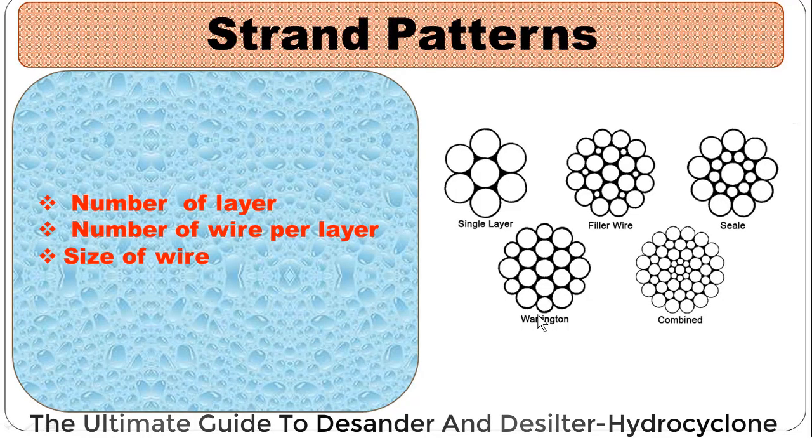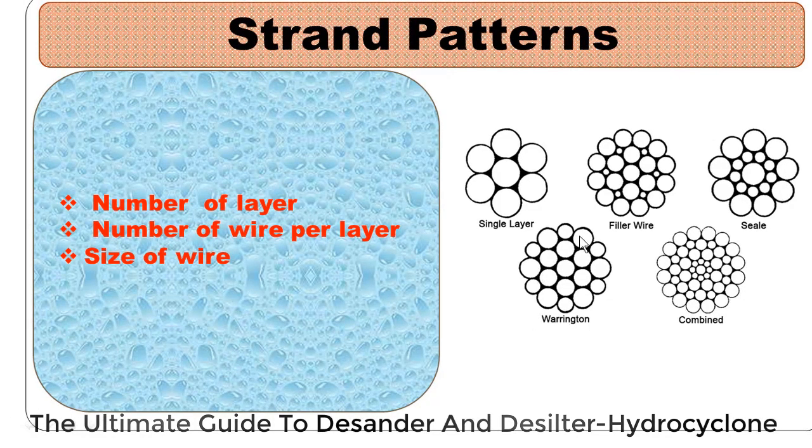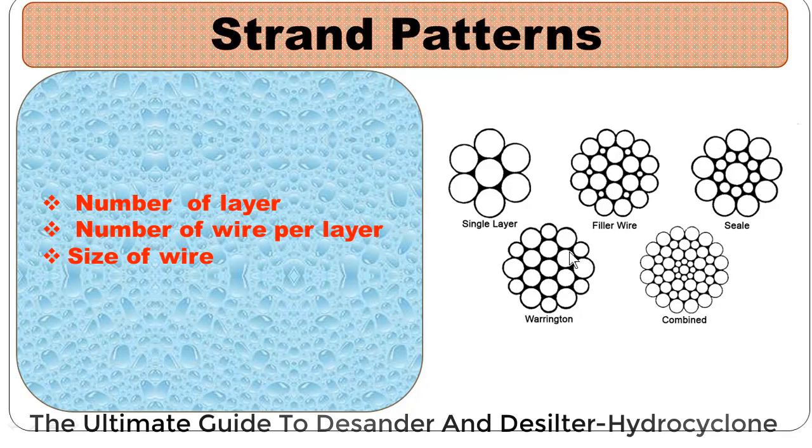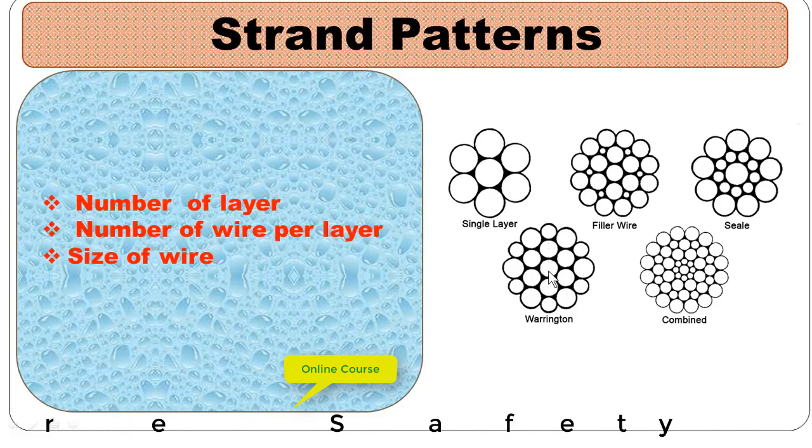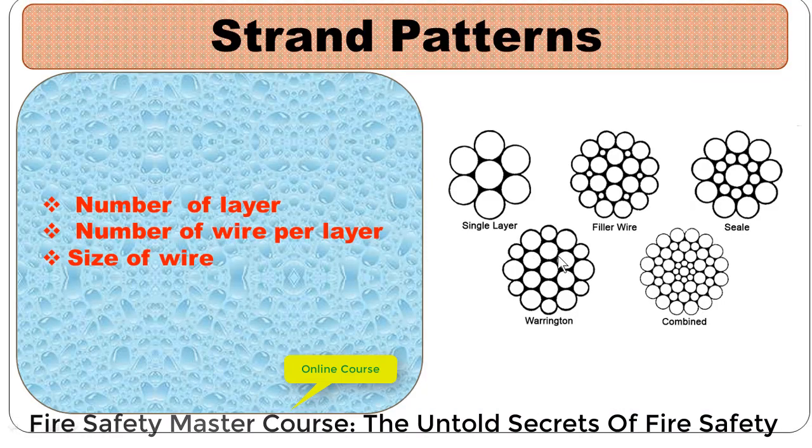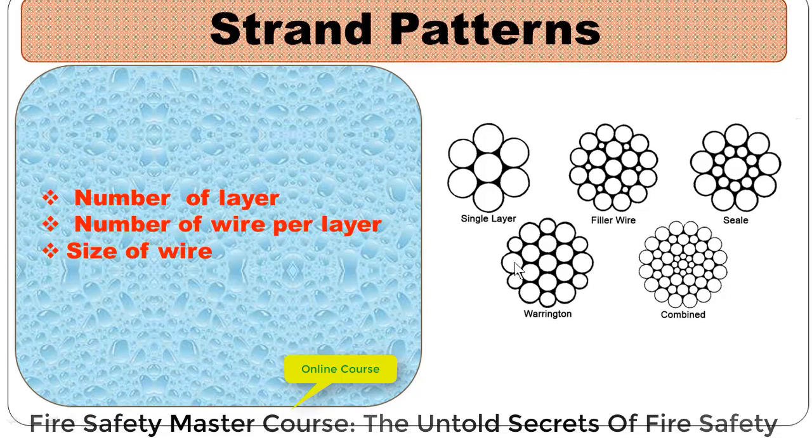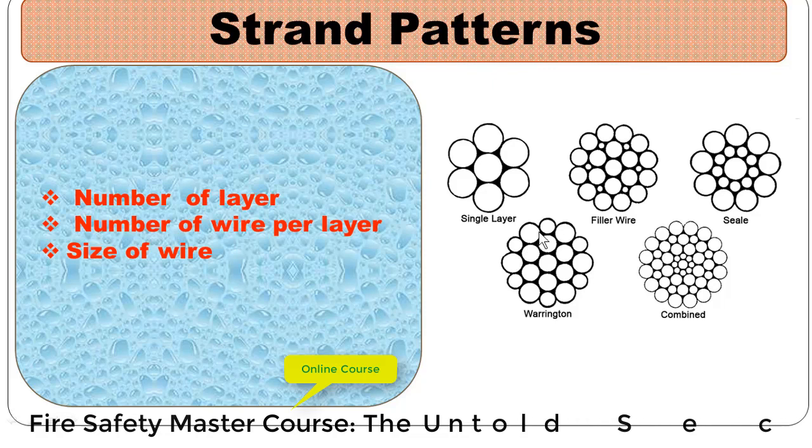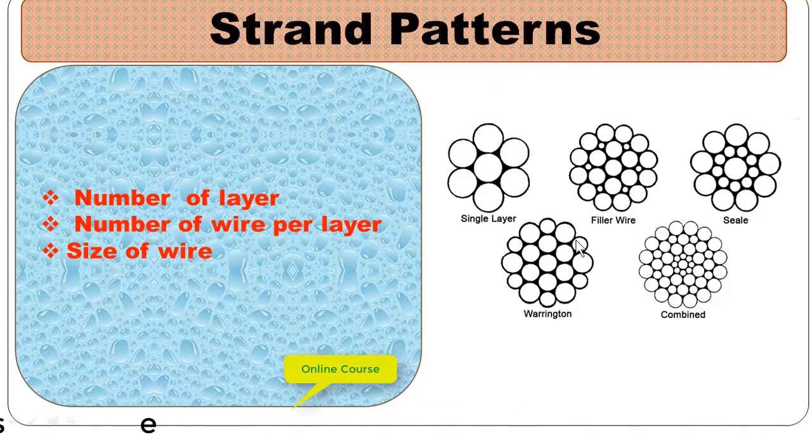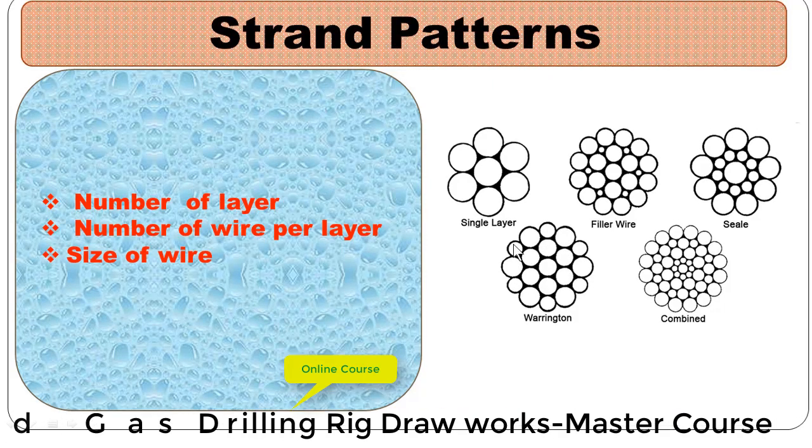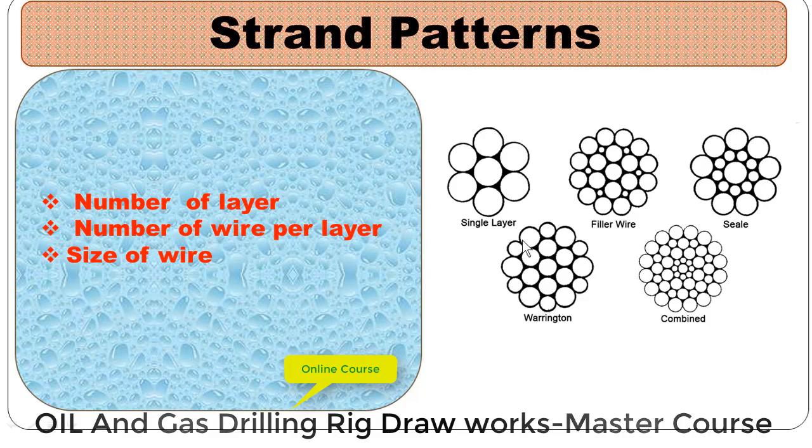Warrington strand pattern: in this pattern we have two layers of wire around the center. We have smaller size wires in the inner layer, whereas the outer layer has large size wires equal in quantity to the inner wires. We also have small wires located between outer layer wires, positioned on the crown of the inner layer wires.